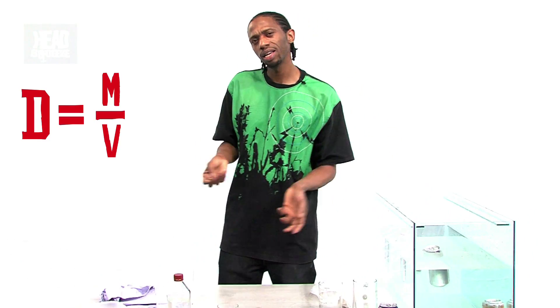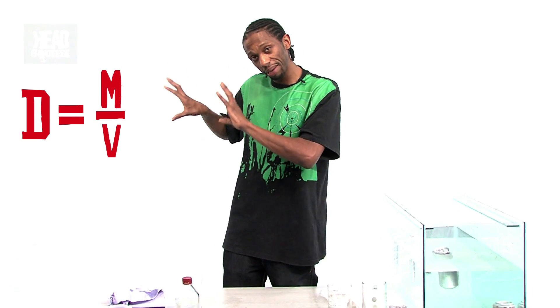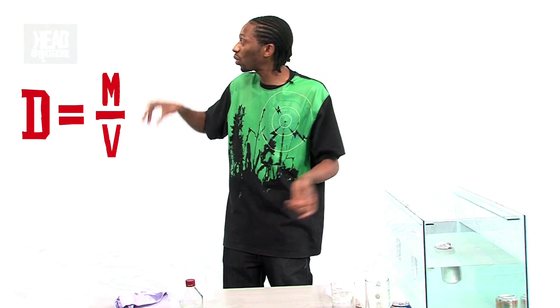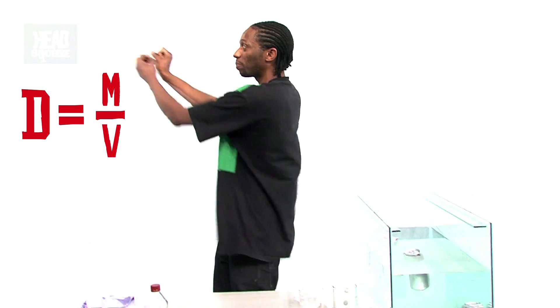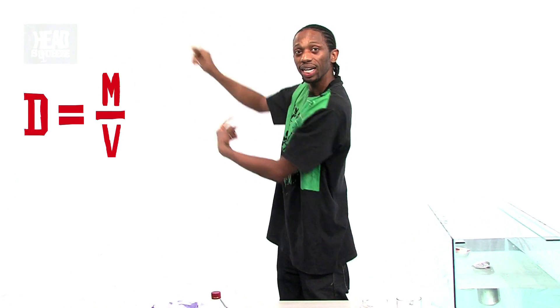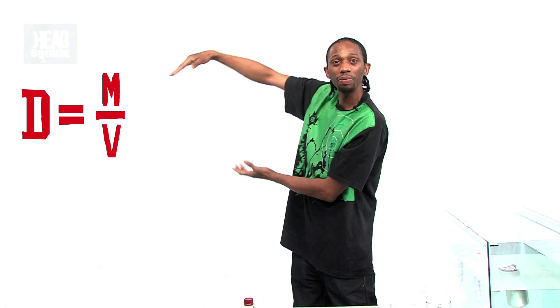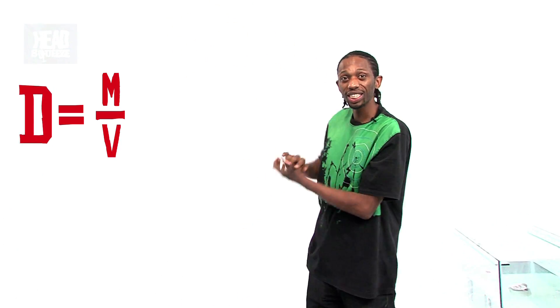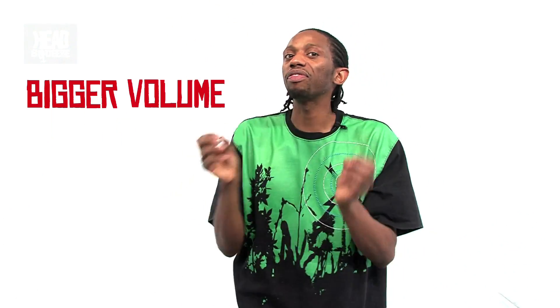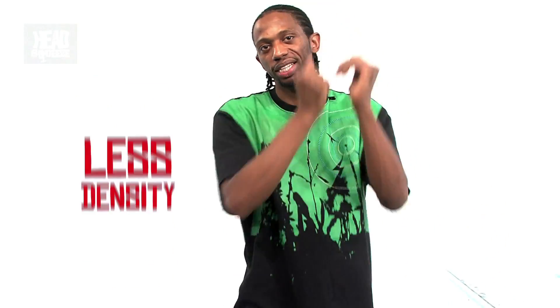We've checked how much volume that has, we've checked how much it weighs with that volume, and we've compared that to how much water would weigh at the same volume. But now we're going to try keeping the mass the same and changing the volume. According to the formula, if you make the volume bigger, that number will be smaller, and if you make the volume smaller, that number will be bigger. So a bigger volume gives smaller density, and if the density is less, it should float to the top.